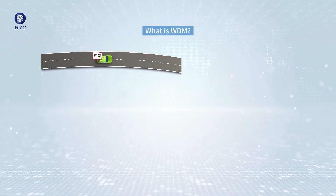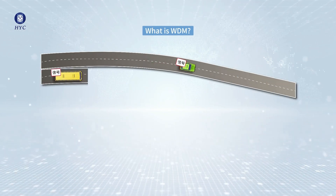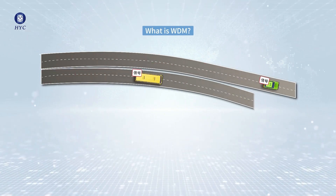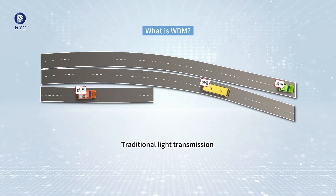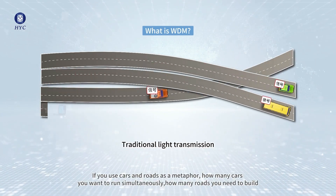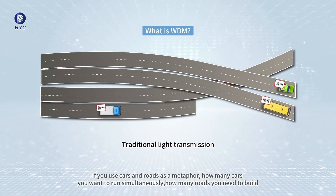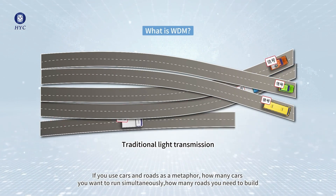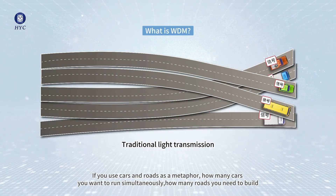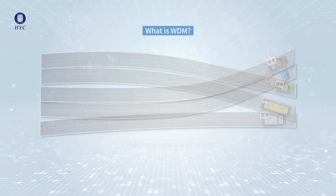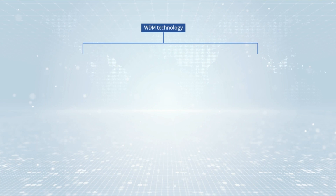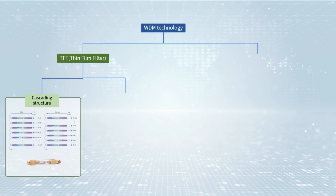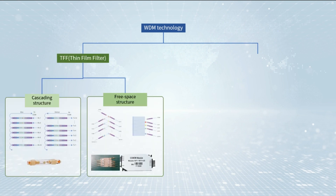WDM is a technology that expands the optical fiber transmission bandwidth and improves network transmission capacity by transmitting multiple optical signals of different wavelengths in the optical fiber. TFF and AWG are two commonly used WDM technologies.